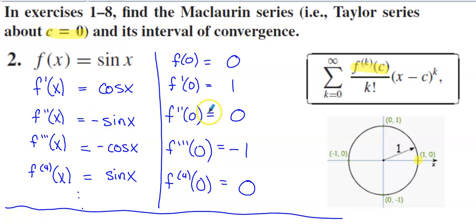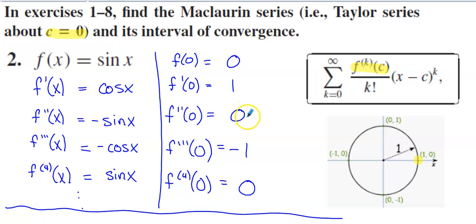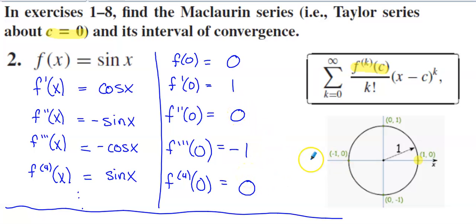The second derivative is back to sine, so that's zero. The third derivative is negative cosine, so that's negative one. The fourth derivative is zero, the fifth is one, and this pattern — zero, one, zero, negative one — continues to repeat if we extend the pattern forward.